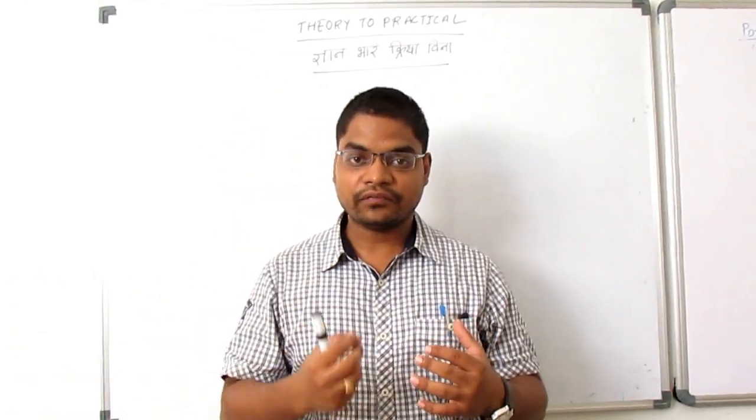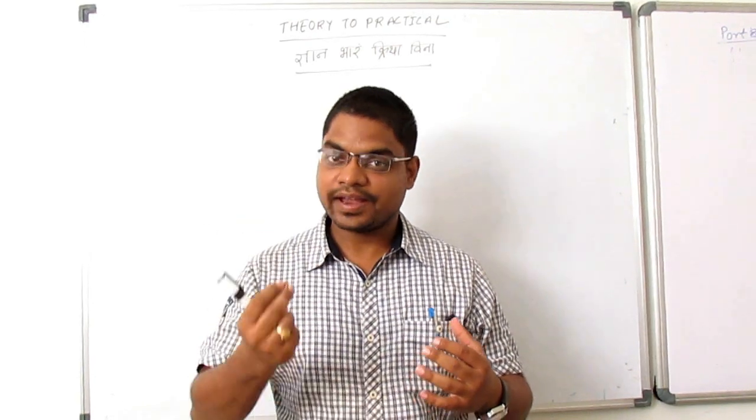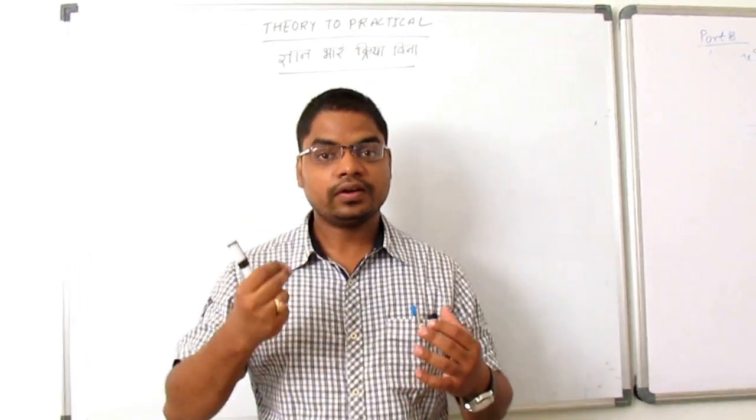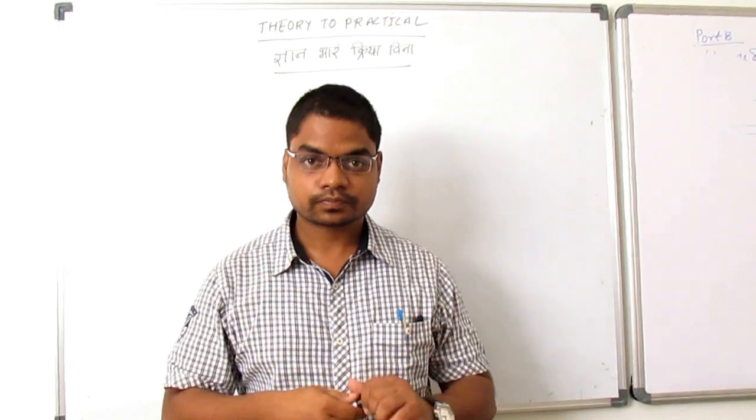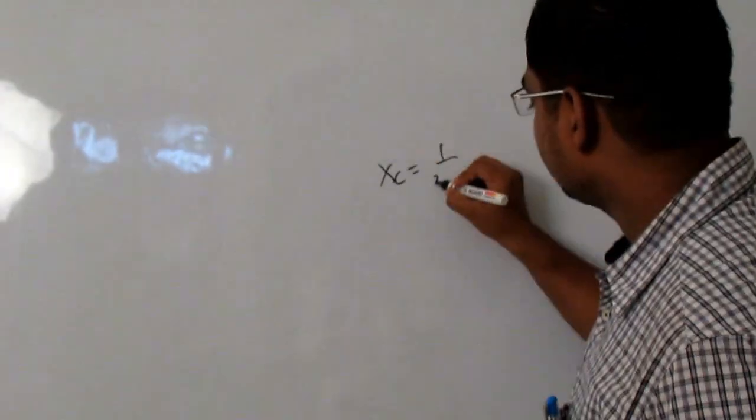Where in case of an AC source, we have a finite reactance because f is not 0. So, it will allow the current to pass through. So, I am writing here the formula: xc is 1 by 2πfc.